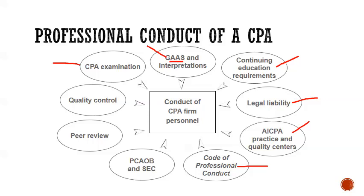The AICPA also has the Code of Professional Conduct — basically a minimum level of behavior. The PCAOB, the Public Companies Accounting Oversight Board, is for publicly traded companies and oversees their accounting and auditing. The SEC is the Securities and Exchange Commission — a watchdog for the stock market. Peer review means one CPA firm auditing another CPA firm to make sure they have good quality control: that they're conducting a good audit, making good tax returns, and that their conduct is according to professional standards.